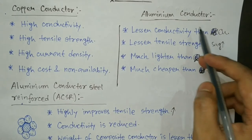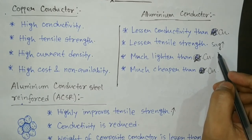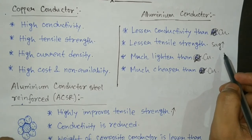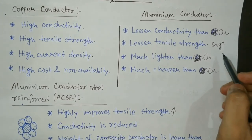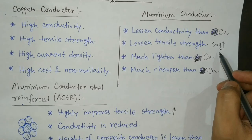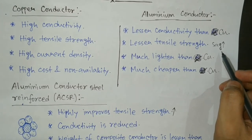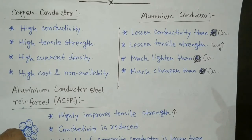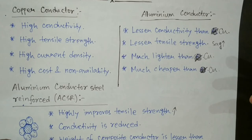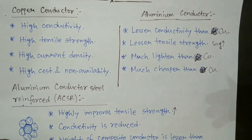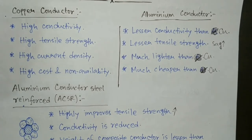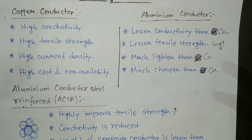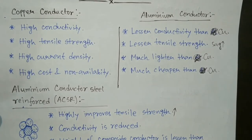In the case of an aluminium conductor, due to the high sag, the line span cannot be increased to a large distance, because a longer span increases sag further. But with ACSR, due to the improvement in tensile strength and reduced sag, you can now place the transmission towers at a longer span — at a longer interval. This means the number of towers also gets reduced, which results in a further reduction in cost.